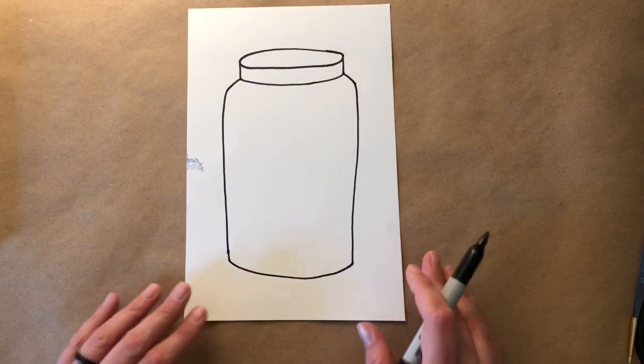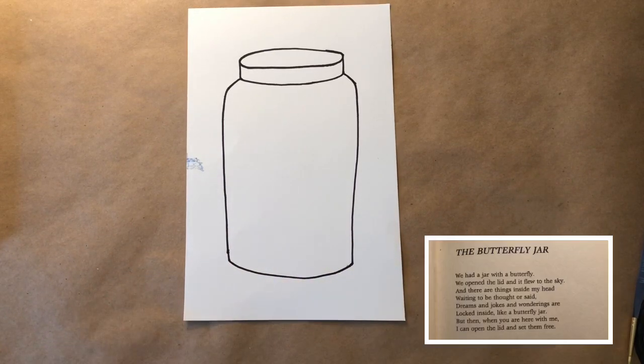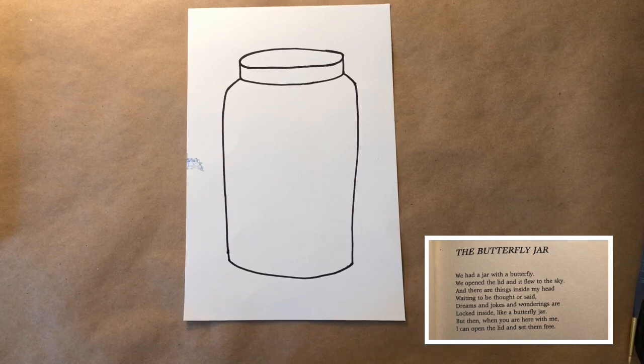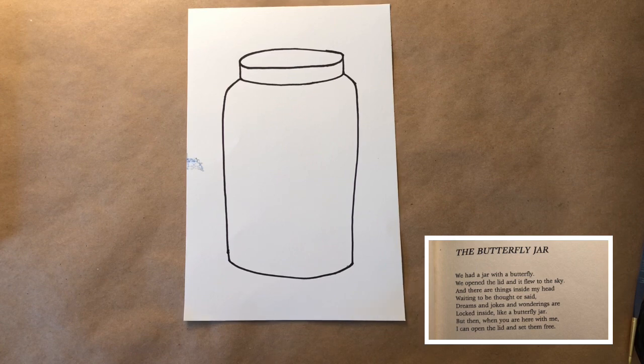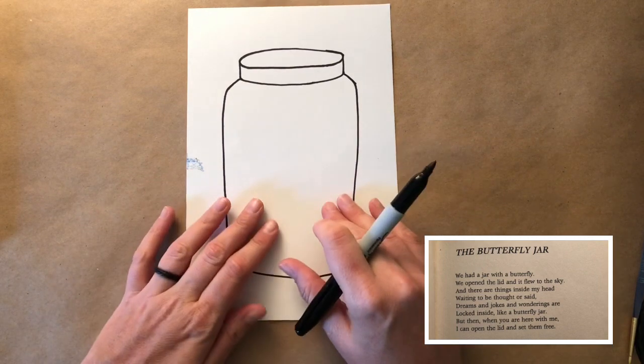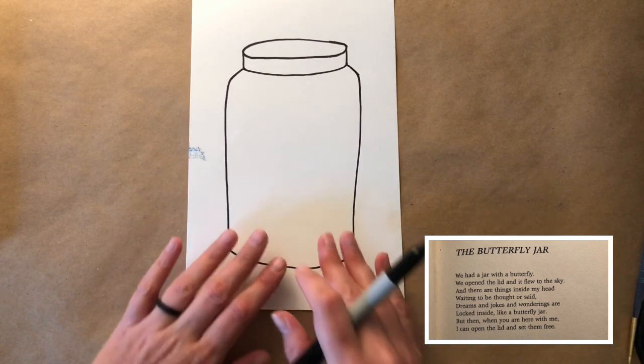So in the butterfly jar poem, it said we opened the lid and it flew to the sky, and there are things inside my head waiting to be thought or said. Dreams and jokes and wonderings are locked inside like a butterfly jar.